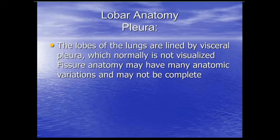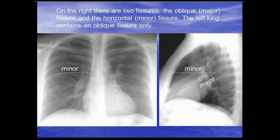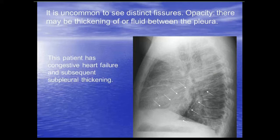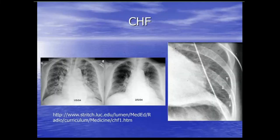The lobes are lined by visceral and parietal pleura, normally not visualized. Fissure anatomy may have anatomic variations and may not be complete. The most common variant is an azygos fissure — an incidental finding. On the right lung there's a minor or horizontal fissure and a major or oblique fissure; the left generally just has a major or oblique fissure. These are the oblique fissures, slightly thickened here because of some edema — the patient had a little CHF. This is another case of CHF or pulmonary edema where you can see the pulmonary vessels are prominent and Kerley B lines along with pulmonary edema on the lateral.